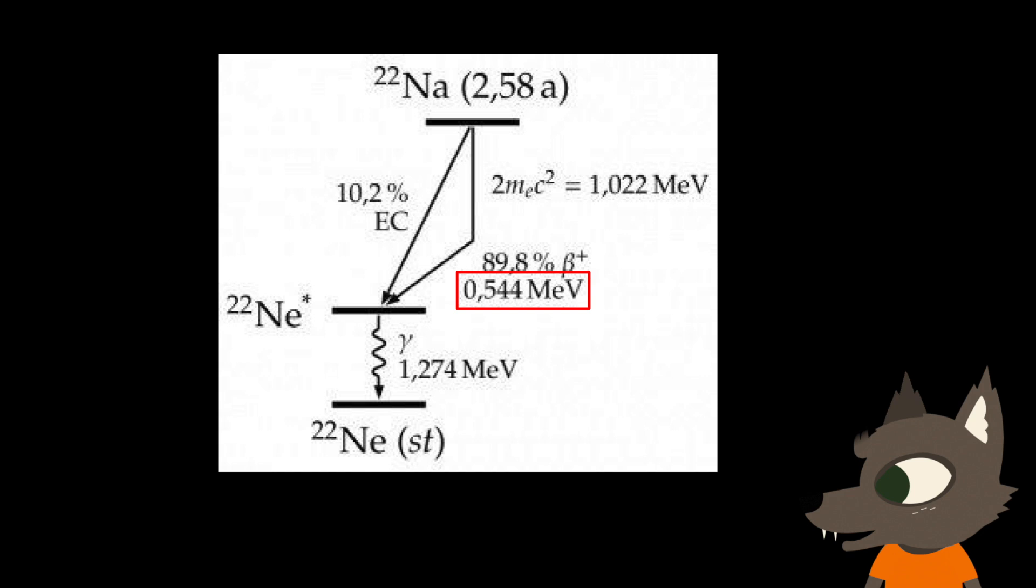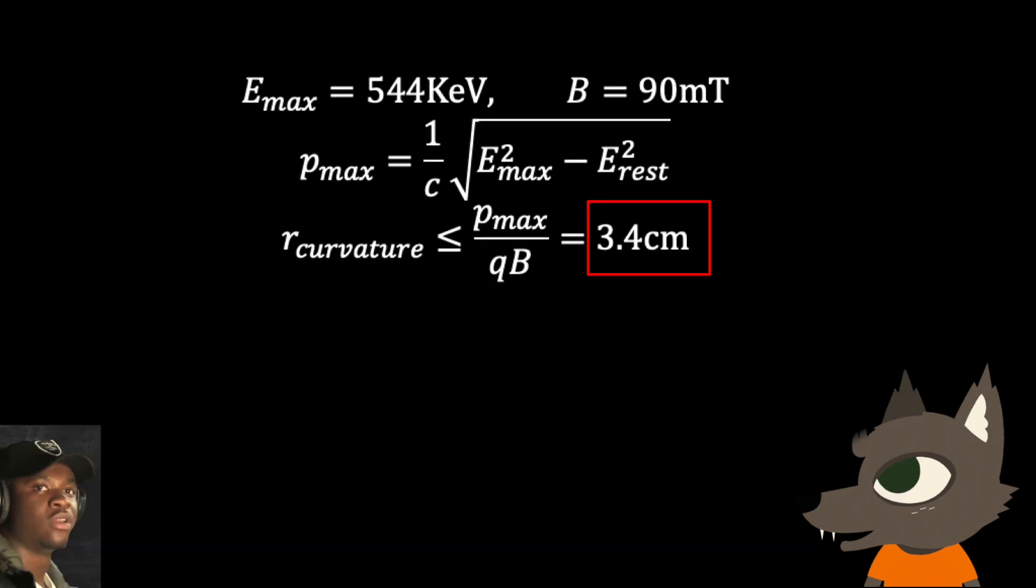Based on the change in energy during the decay process, we should expect to observe positrons with kinetic energies up to 546 kilo electron volts, which corresponds to velocities of about 88% light speed. However, most of the particles we detect will have substantially less energy, as they collide with air molecules and the source itself. Doing some quick maths, this means we should expect to see trails curving clockwise with a radius of 3.4 centimeters or smaller.